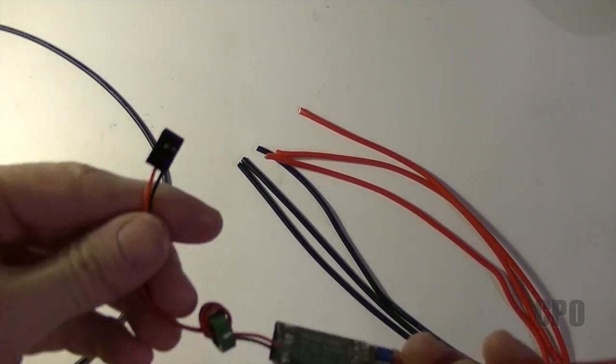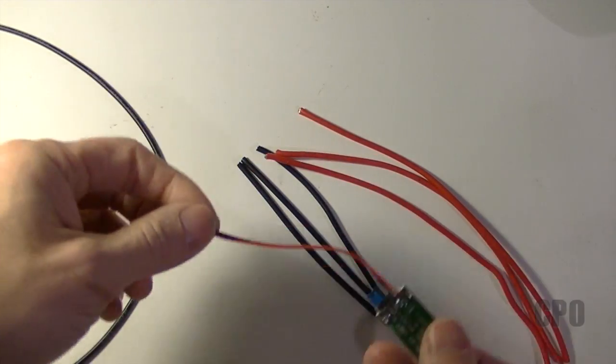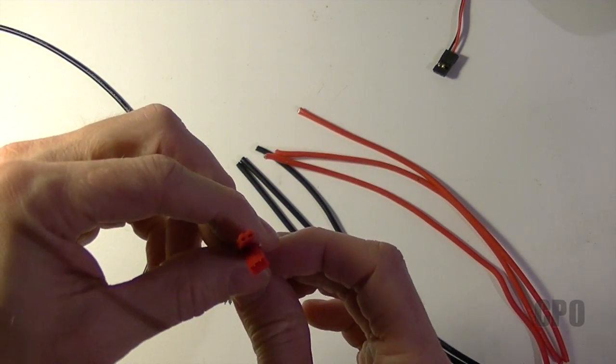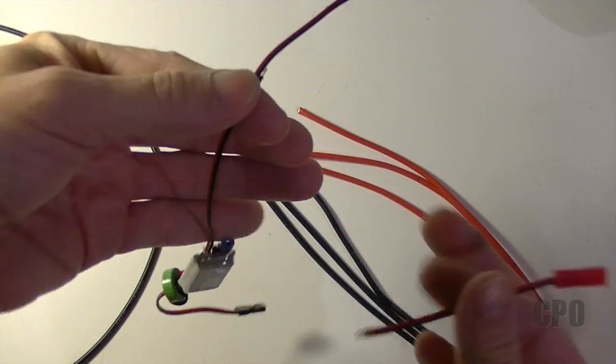So for connecting my external BEC I need a sort of a pigtail to tie off the power and for that I'm going to use JST connectors. I have a male and a female set here that I'm going to use and I want to connect the female side to the battery.